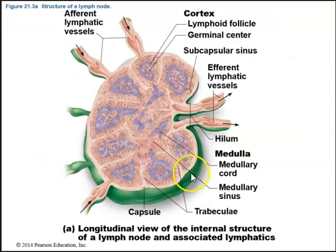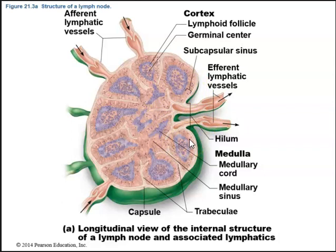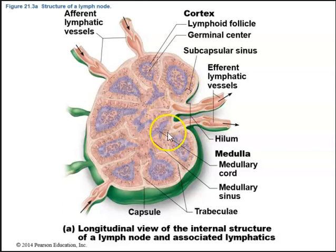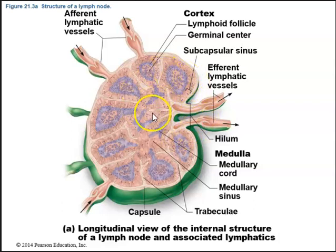The hilum is a structure you'll see in many organs throughout the body — in the lungs, kidneys, and spleen. A hilum is basically an area or region where vessels enter and exit an organ. Lymph will exit the lymph node via efferent lymphatic vessels through the hilum.